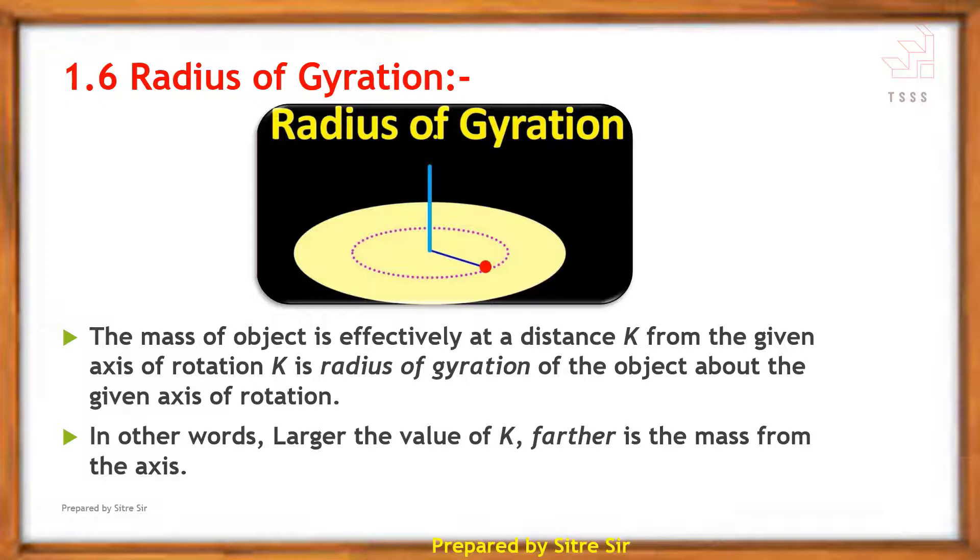Moment of inertia in terms of radius of gyration: I is equal to m K squared. I is moment of inertia, m is mass, K is radius of gyration.